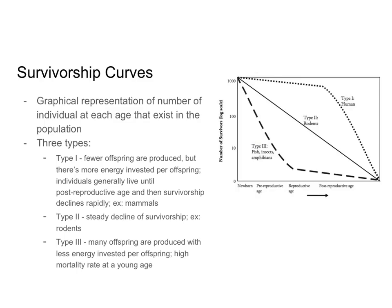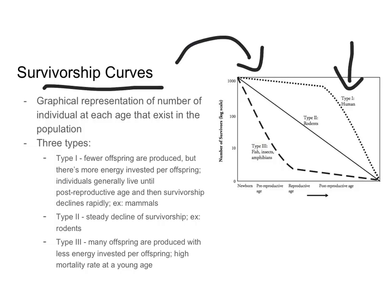Another interesting thing to look at in terms of population growth are survivorship curves. A survivorship curve is a graph showing you how many individuals of a certain age are alive in a certain population. We have three main types. The first is called type one. In this survivorship curve, between the newborn age and reproductive age, individuals don't really die — this slope is very low, which means for the most part individuals survive until reproductive age. But when they get older, they have a much higher chance of dying.